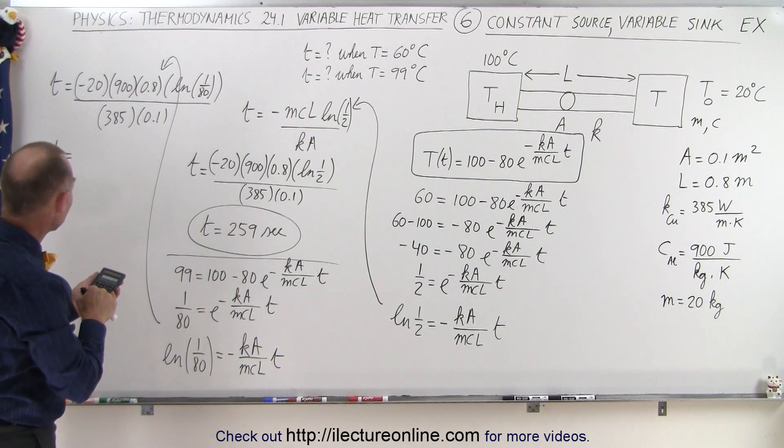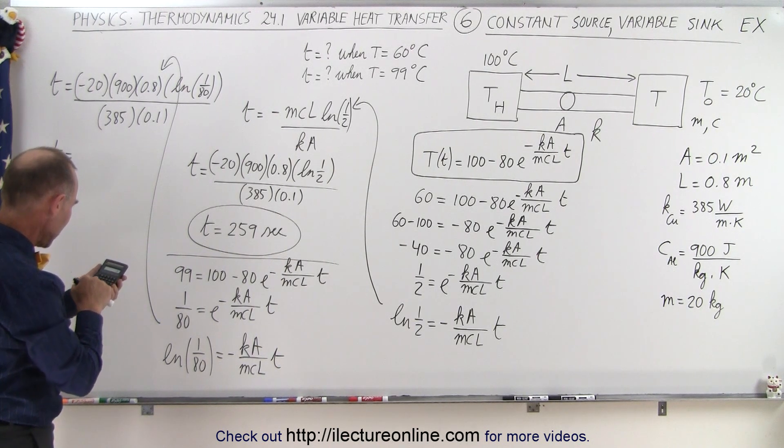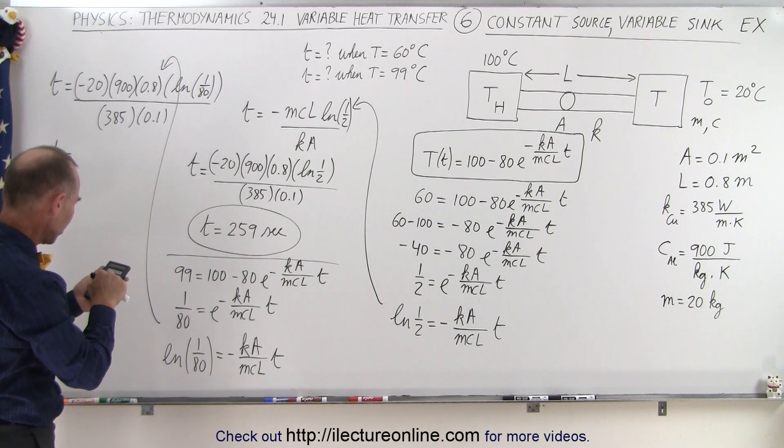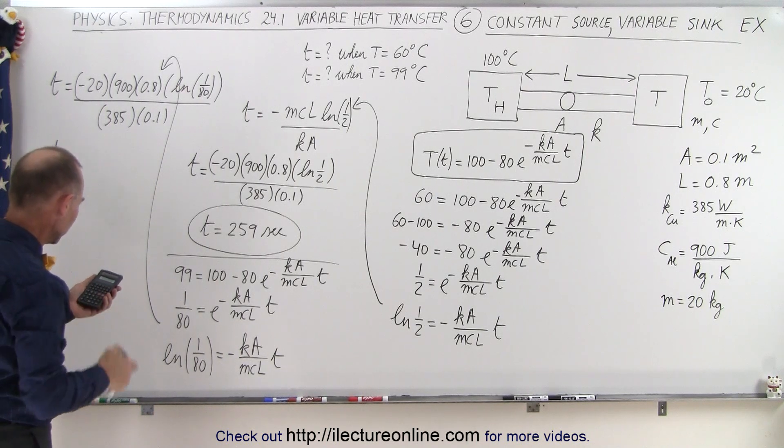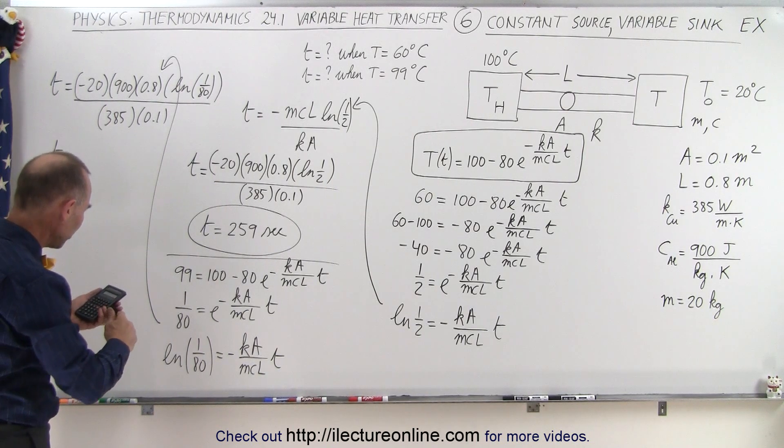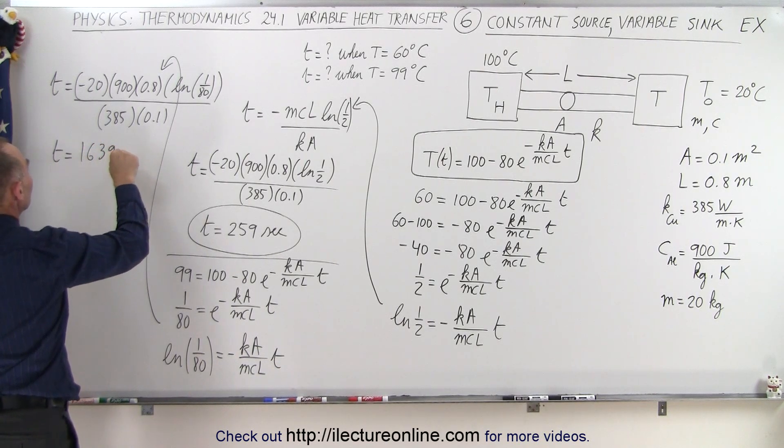So we have 20 times 900 times 0.8 times 1 divided by 80, take the natural log of that, put the negative in front, divided by 385, and divide by 0.1, and so that ends up being 1,639 seconds.